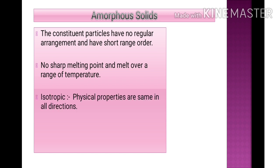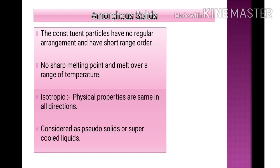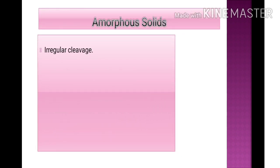Amorphous solids are isotropic in nature, meaning physical properties are the same in all directions and do not vary along different directions. Amorphous solids are termed pseudosolids or supercooled liquids. 'Pseudo' means false — so why are they called false solids? Because unlike true solids, amorphous solids do move, but at a very, very slow speed. They also show irregular cleavage when cut with a knife.